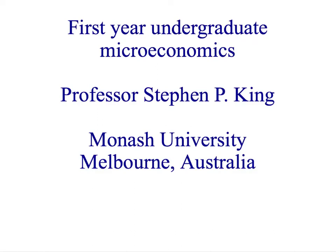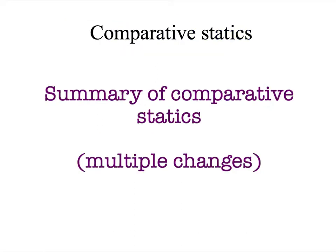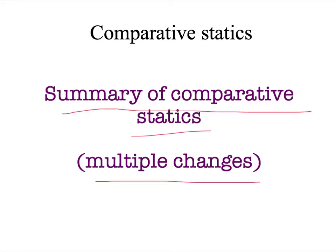Hi, and welcome back to First Year Microeconomics. Last time, we looked at our summary of comparative statics and considered what occurred if there was a shift in either the demand curve or the supply curve. In this presentation, we're going to look at what happens if both the demand and supply curves shift, so that we're dealing with a situation where there are multiple changes occurring in a market at the same time.